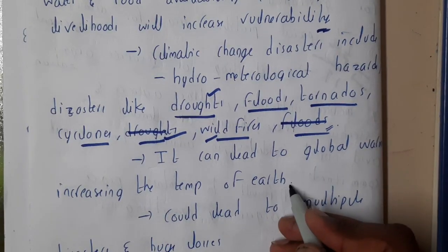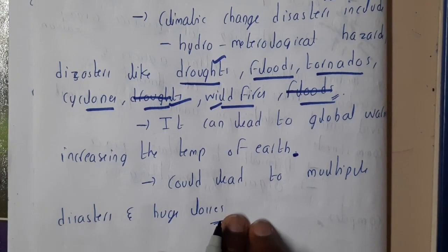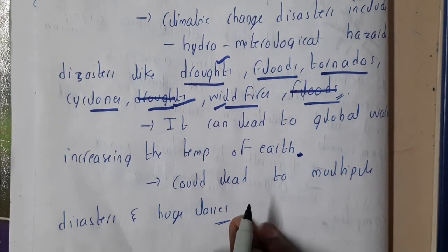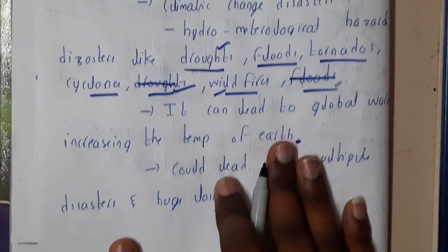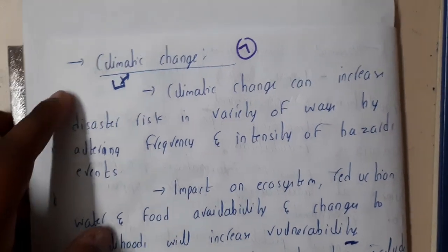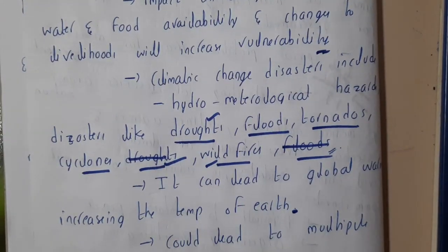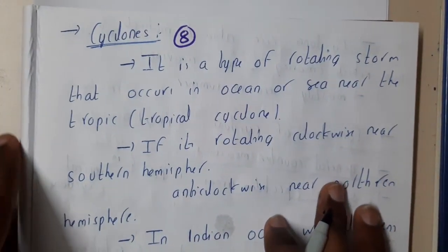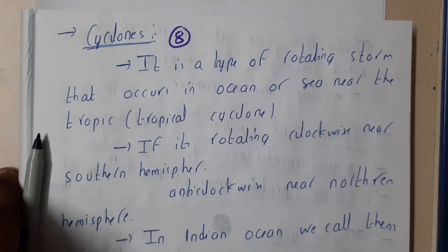Climate change can lead to global warming, increasing the temperature of the earth beyond normal levels, which could lead to multiple disasters and huge losses. If a question on climatic changes is given for higher marks, just explain these kinds of disasters so that you can score more marks. In the next lecture, we'll be going through cyclones. Let us meet in the next lecture, thank you.